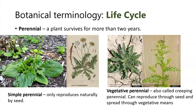Vegetative perennials, also called creeping perennials, can reproduce through seed but also through vegetative means. After you destroy the top growth, they can regrow from underground organs and spread. An example is Canada thistle — shown here as a rosette and then after it has shot up and flowered. It's important to distinguish biennials from perennials for management decisions, since a technique that works best for biennials might not be the most effective for perennials.